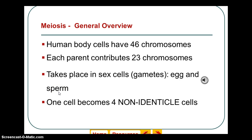In meiosis, one cell becomes four non-identical cells — in other words, four genetically different cells. While in mitosis, you had two genetically identical cells being produced.